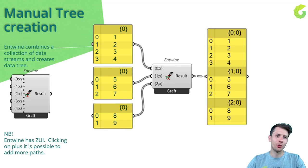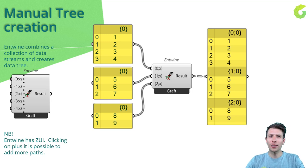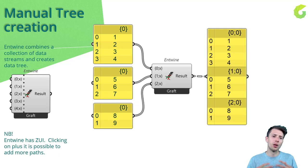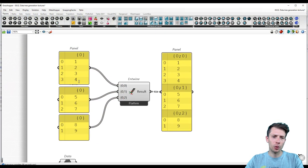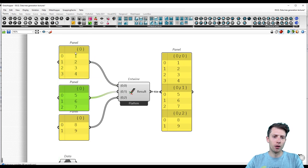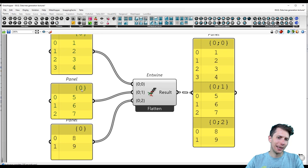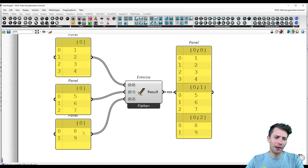The second method of manually creating a data tree is using the Entwine component. Entwine combines a collection of data streams and creates a data tree — it works similarly to merge, but instead of merging into one list, it creates separate data tree structures. Using the zoomable user interface you can add more data tree structures and make them grafted or flattened. In this example we have three lists: four elements in the first, three in the second, and two in the last — all placed in path {0}.